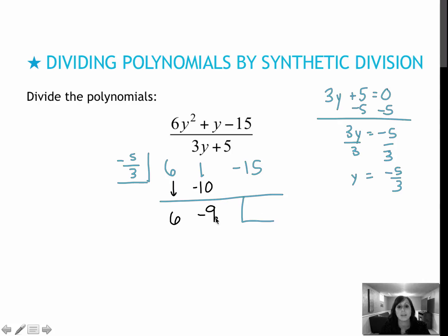Below the line I multiply, so negative 9 divided by 3 is negative 3 times negative 5 is positive 15. Add those together, I get 0, which means no remainder.